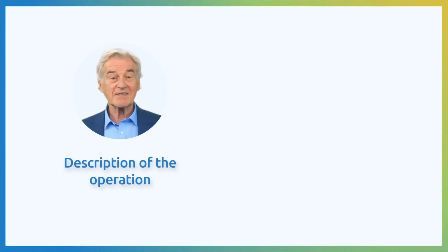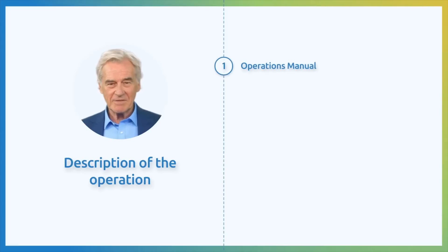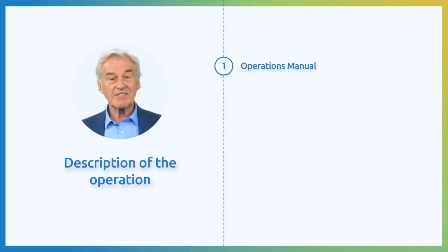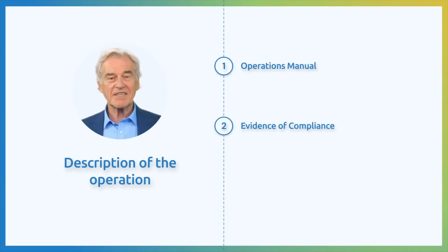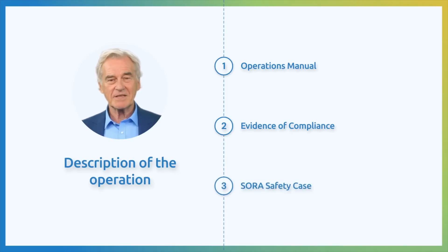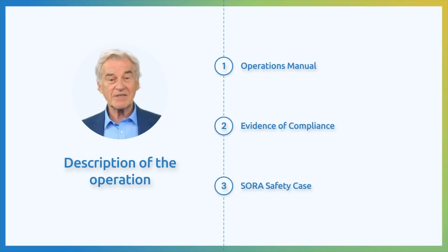When you've completed the SORA process, you will need to create three important sets of documents. First, the Operations Manual — this manual will contain procedures that your team needs to follow to ensure safe drone operations, based on the safety objectives and mitigations you've implemented. Second, Evidence of Compliance — you'll need to provide evidence that you've met all the safety requirements and levels of assurance, with specifics depending on the level of assurance required. Third, the SORA Safety Case — this document describes how you've gone through the SORA process and outlines each step you've taken. The first step is to gather all the necessary information to complete these documents once you've finished all the SORA steps.